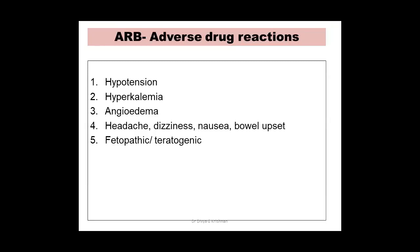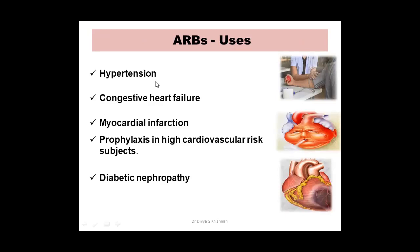Adverse effects of ARBs: hypotension, hyperkalemia, angioedema, headache, dizziness, nausea, and they are teratogenic. Notably, cough is not seen with ARBs — this is very significant. Dysgeusia, acute renal failure, and proteinuria are also not seen with ARBs. Comparatively, ARBs have fewer adverse effects than ACE inhibitors, which is one reason they have become more popular. Uses are the same: hypertension, congestive heart failure, myocardial infarction, prophylaxis in high cardiovascular risk subjects, and diabetic nephropathy — but not scleroderma crisis.